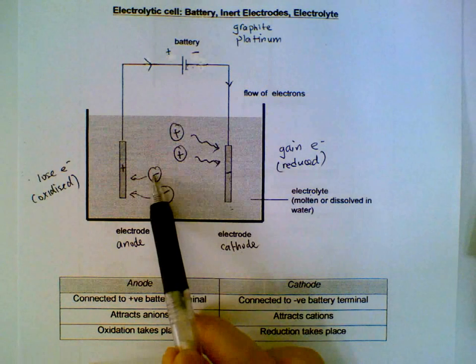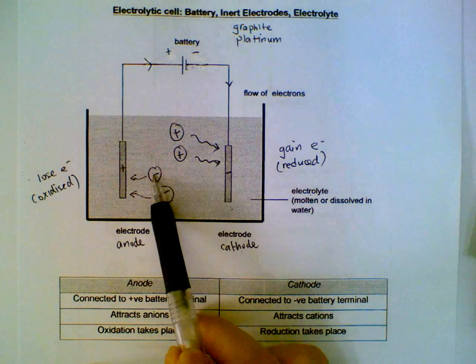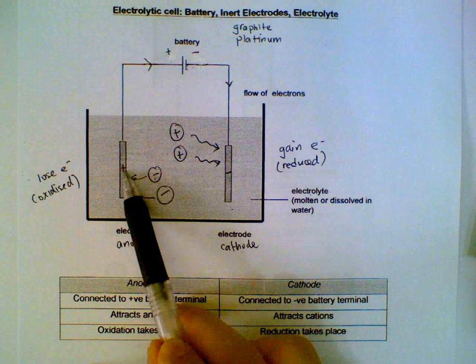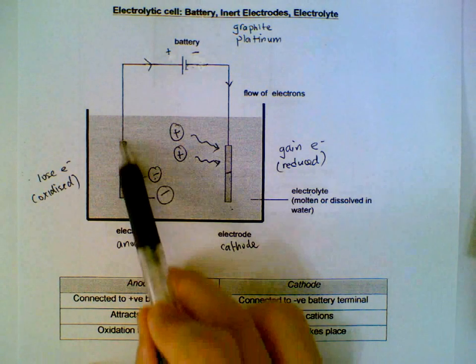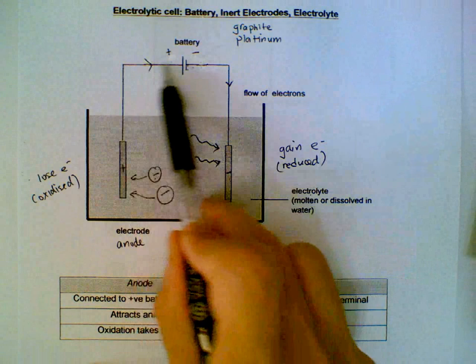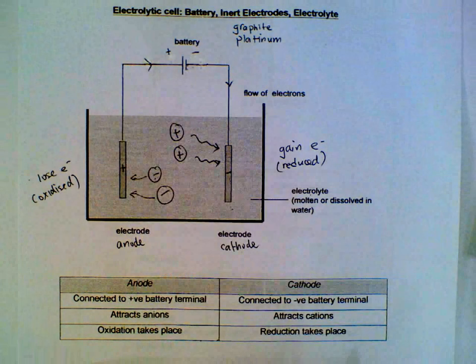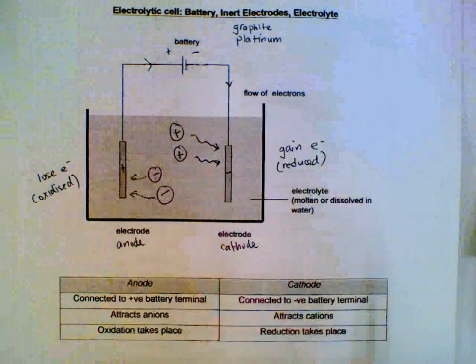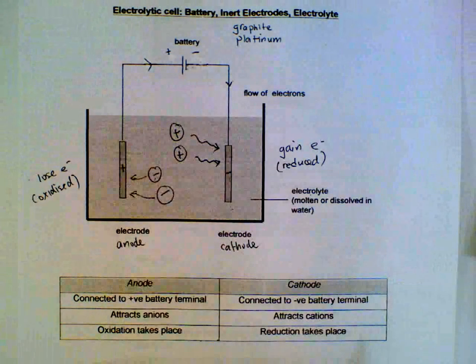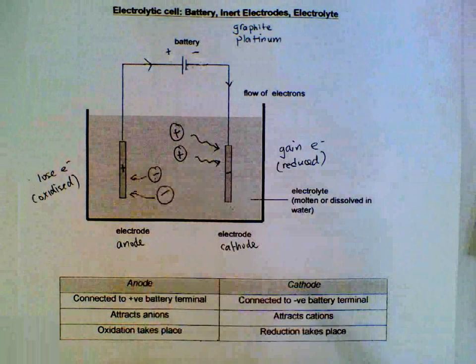Over here, we have the negative ions depositing the electrons which traverse up the wire and complete the circuit here. So this is how the flow of electricity and current is completed within an electrolytic cell.